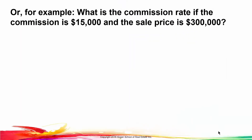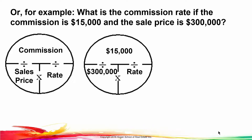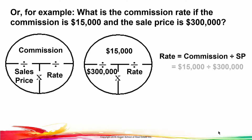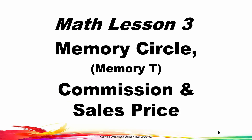Another example: what's the commission rate if the commission is $15,000 and the sales price is $300,000? With commission as the small dollars on top and sales price on the bottom, we divide $15,000 by $300,000 to get a rate of 5%. That concludes math lesson number three on the memory circle, commission and sales price problems.